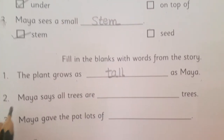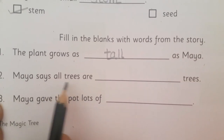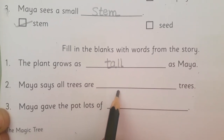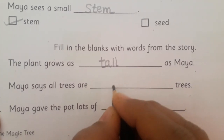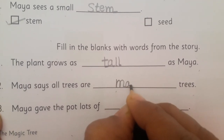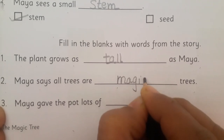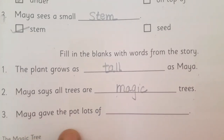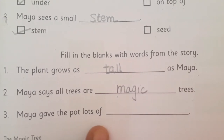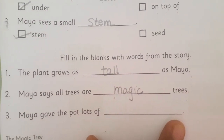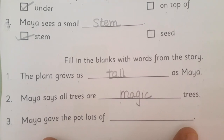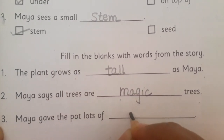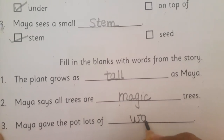Second fill in the blank: 'Maya says all trees are dash trees.' What is the answer? Magic — all trees are magic trees. Third sentence: 'Maya gave the pot lots of dash.' What did Maya give? Yes — water. So we write water.